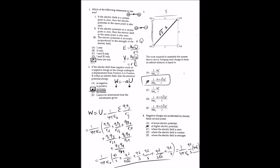For question 4, negative charges are accelerated by electric fields toward points at higher electric potential. By definition, ΔV = −W/q. If an electric field accelerates a negative charge doing positive work on it, then W is positive. Since q is negative, the ratio −W/q is positive, meaning ΔV will increase, so the negative charge accelerates toward points at higher electric potential.